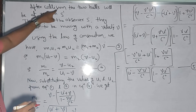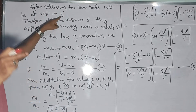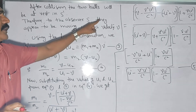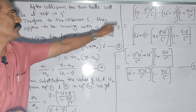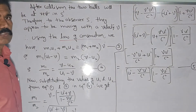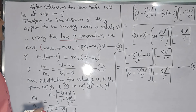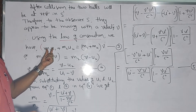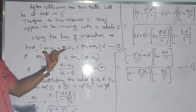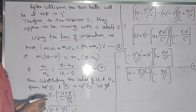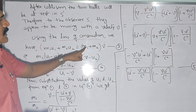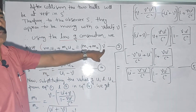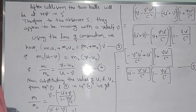After collision, the two balls are at rest in S', but for observer S they appear to be moving with velocity V — the velocity of the moving frame S'. Applying the law of conservation of momentum: before collision the total momentum is M1·U1 + M2·U2, and after collision the total mass (M1+M2) moves with velocity V. So we write M1·U1 + M2·U2 = (M1+M2)·V.